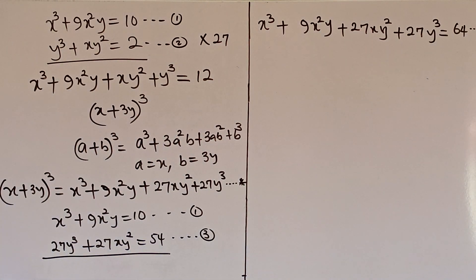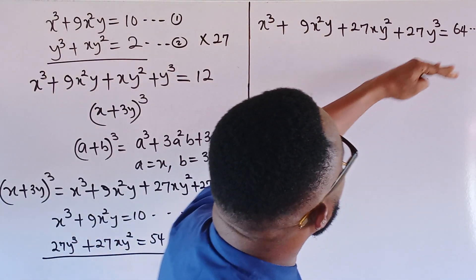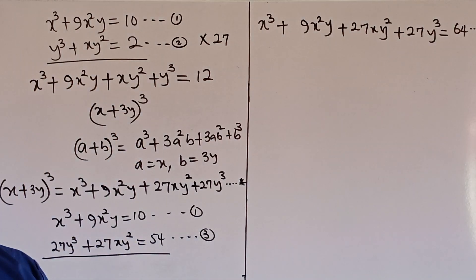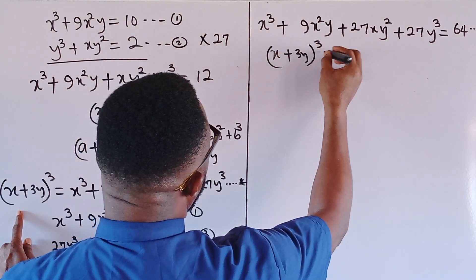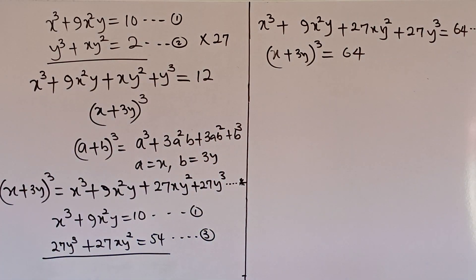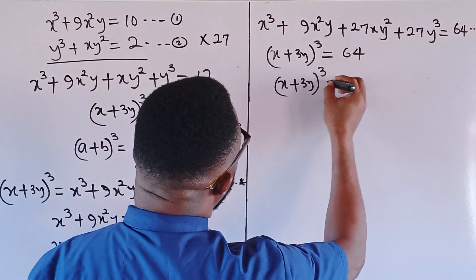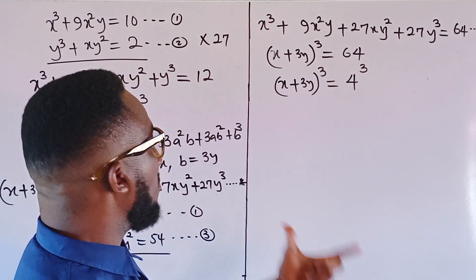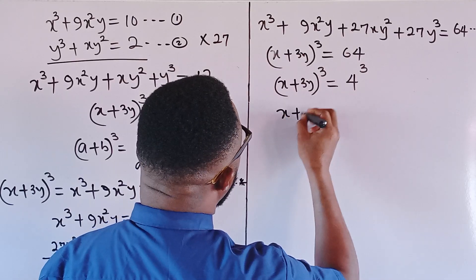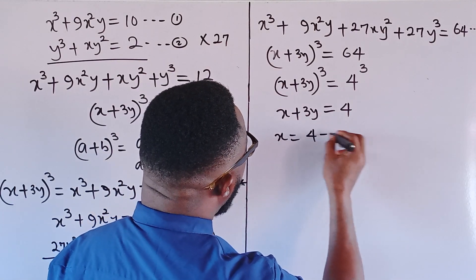As you can see, what we have in equation star — x³, 9x²y, 27xy², 27y³ — is exactly what we have on the left side of equation double star. So by comparing these two equations, we can say (x + 3y)³ = 64. Now 64 is a perfect cube, so (x + 3y)³ = 4³. Because we have the same exponent, we equate the bases: x + 3y = 4. Making x the subject: x = 4 − 3y. I'll call this equation 4.